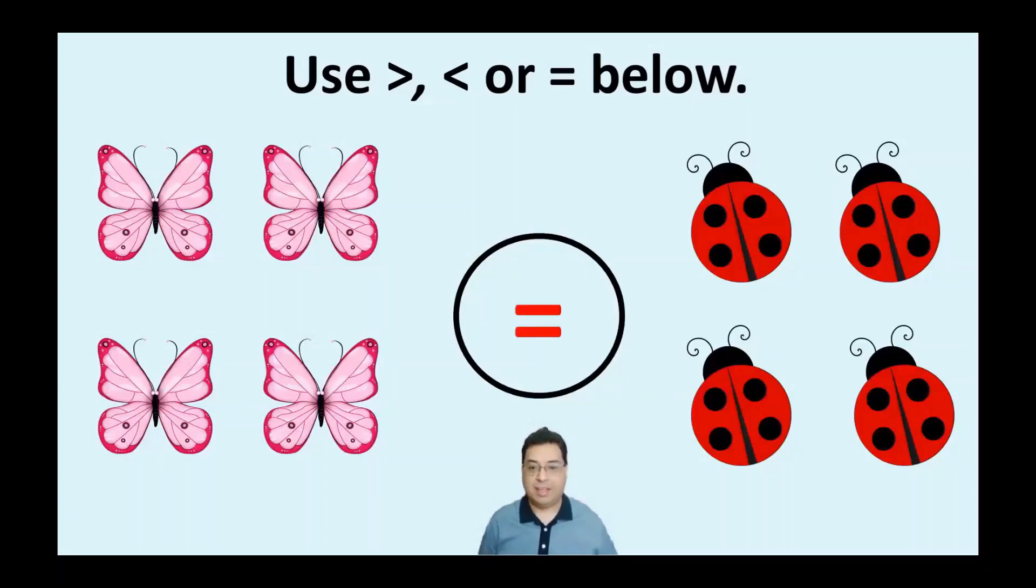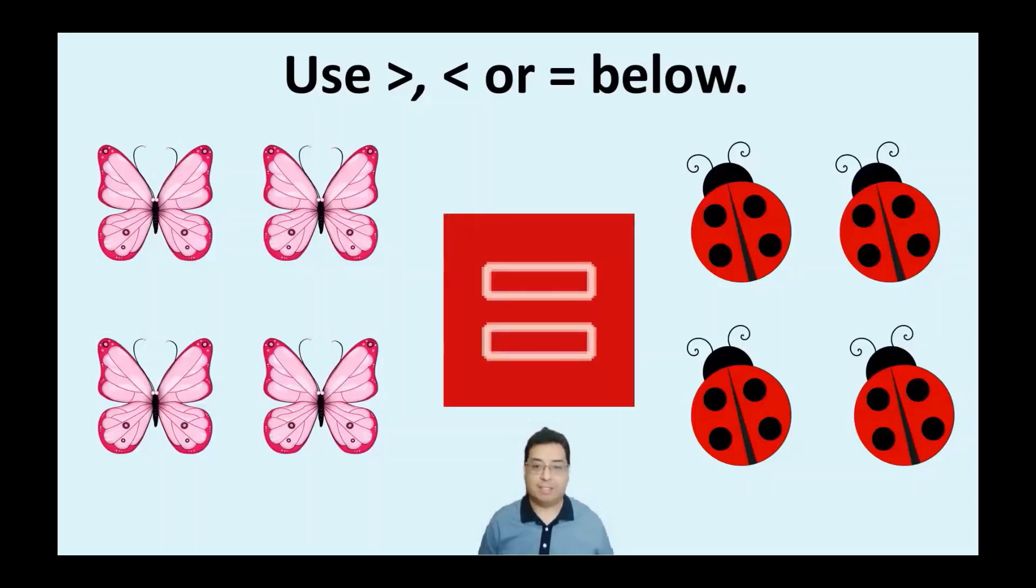Now I was lucky enough to find a Pac-Man symbol here that's showing that he's basically going to eat both because of the same amount here. So the equals means that they're both the same amount. There's four butterflies. There's four ladybugs. Hence, neither one is greater than or less than.